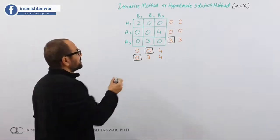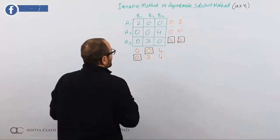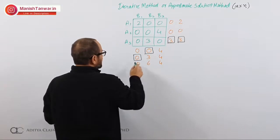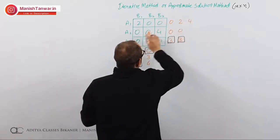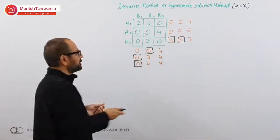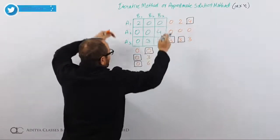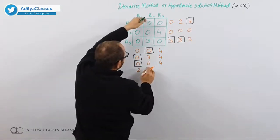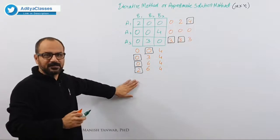Now A selects best returns from the cumulative totals — the best is still 3, so A selects A3 again. These values are added to the previous totals: 0 plus 0 is 0, 3 plus 3 is 6, 0 plus 4 is 4. B will again select from those column totals. Adding B1's values: 2 plus 2 giving 4, 0 plus 0 giving 0, and 0 plus 3 giving 3. Now A will switch — instead of selecting 3 again, A will switch to 4.